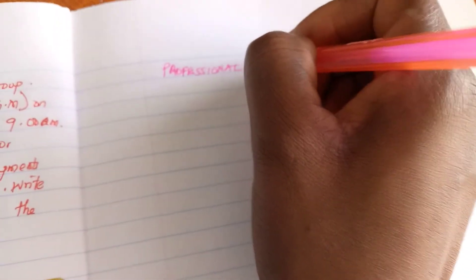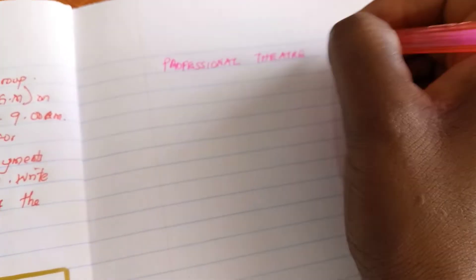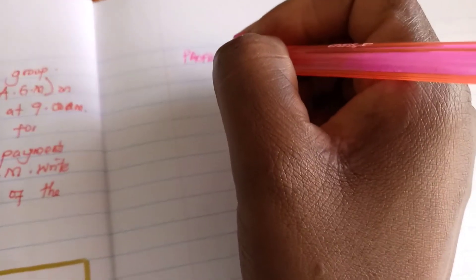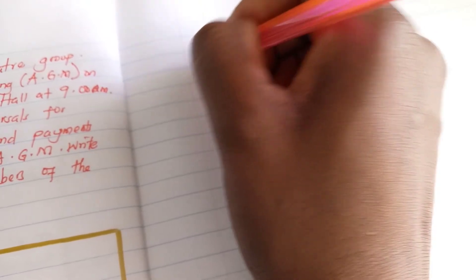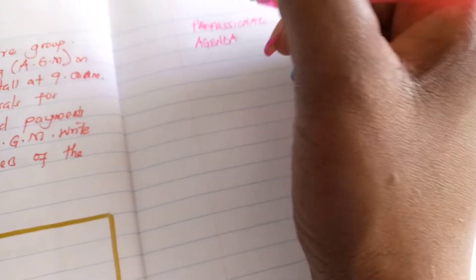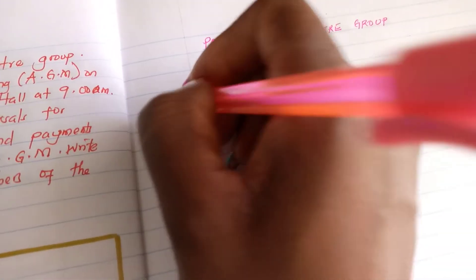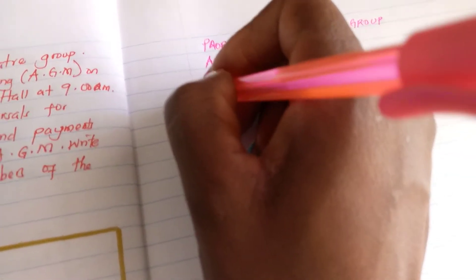The name of the group will come first: Professional Theatre Group. Then after you write that, you should underline and then you write 'Agenda.' We have been given the agenda, but first when you're writing the agenda, you have to write the preliminaries.